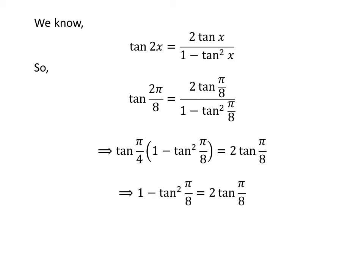We know tangent of pi upon 4 is equal to 1, so 1 minus square of tangent of pi upon 8 is equal to 2 times tangent of pi upon 8. Shifting 2 times tangent of pi upon 8 from the right hand side to the left hand side and then multiplying the whole equation by minus 1, we get square of tangent of pi upon 8 plus 2 times tangent of pi upon 8 minus 1 is equal to 0.